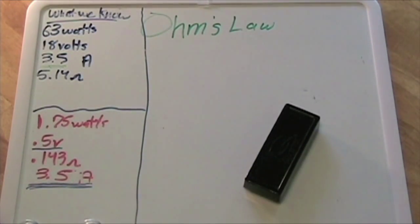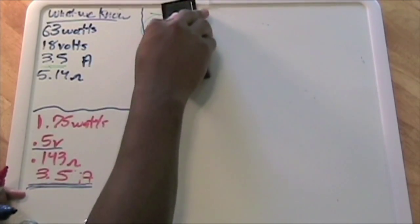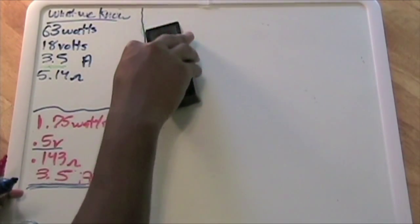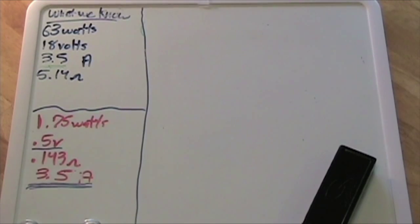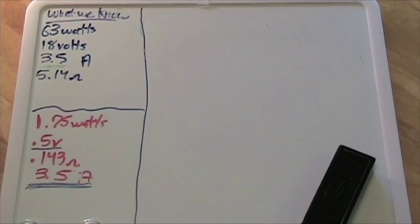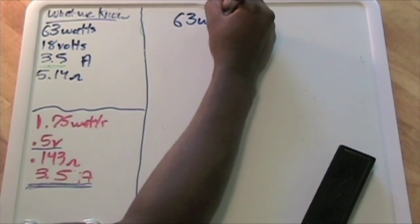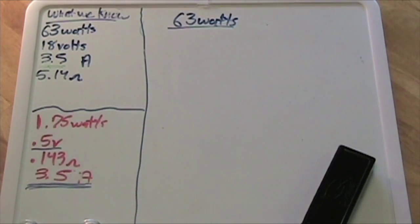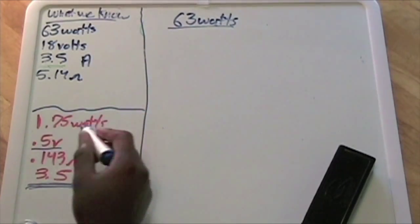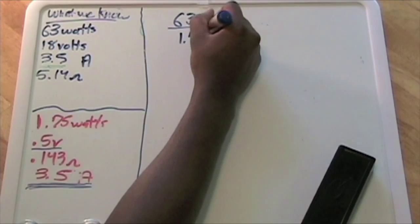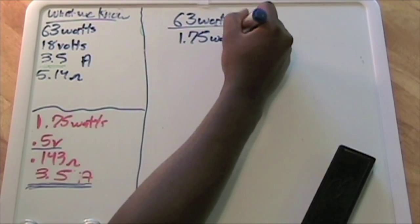Now moving on from Ohm's Law—that's just a basic overview—let's think about if we want to build, say, a 90-watt solar panel. How many solar cells would we need? Well, let's take a value we already know: 63 watts divided by—we're trying to find out how many solar cells we need—so divided by 1.75 watts per cell.